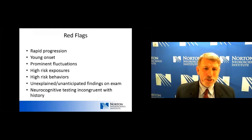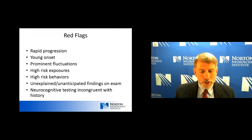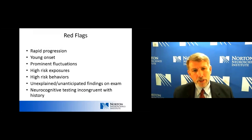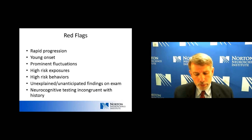There are certain red flags that may point us to a more detailed investigation. The two most important are rapidly progressive dementia — from onset to severe dementia or death in less than two years — and young onset. Other things to consider include prominent fluctuations, high-risk exposures or behaviors, unexplained findings on exam, and neurocognitive testing that's incongruent with the history, all of which would prompt us to think of other potential etiologies.